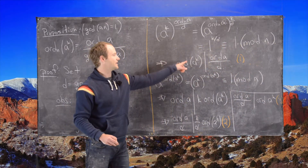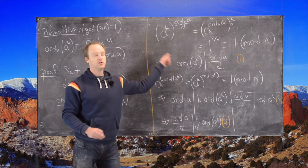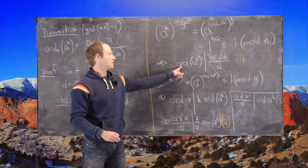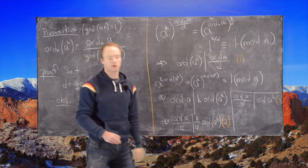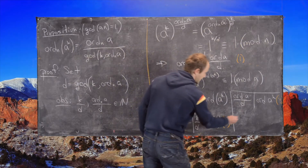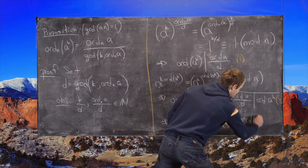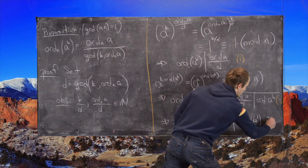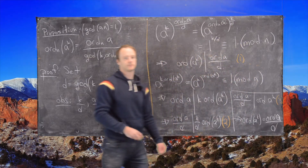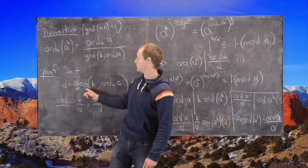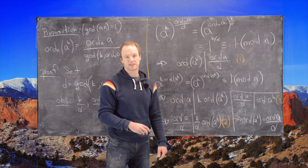Looking at equations 1 and 3 together, we have mutual divisibility: the order of a to the k divides the order of a divided by d, and the order of a divided by d divides the order of a to the k. This means they are equal — the order of a to the k equals the order of a divided by d. That's exactly what we wanted to show, so that's the end of the proof.